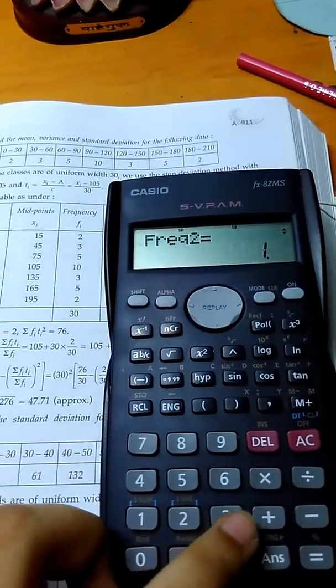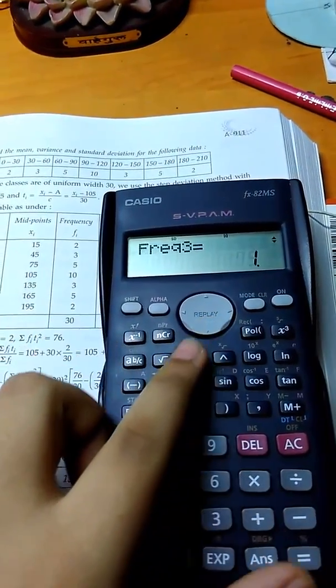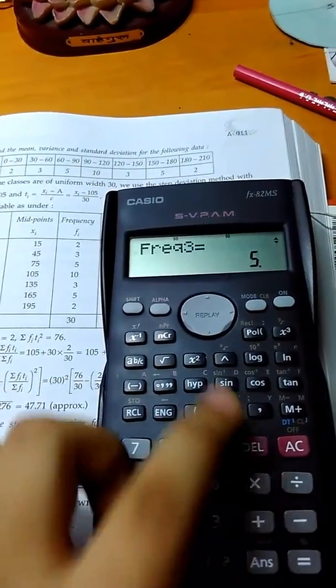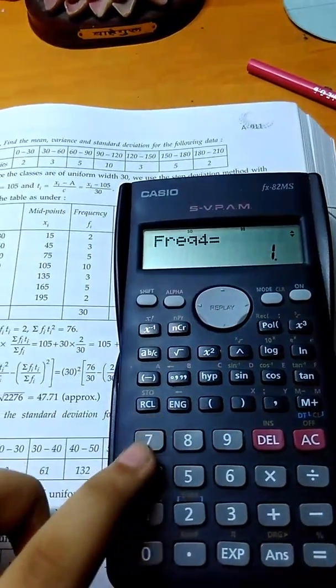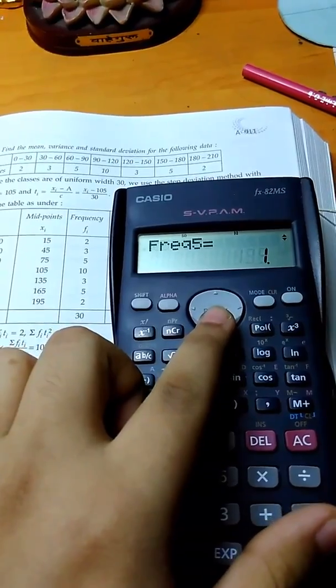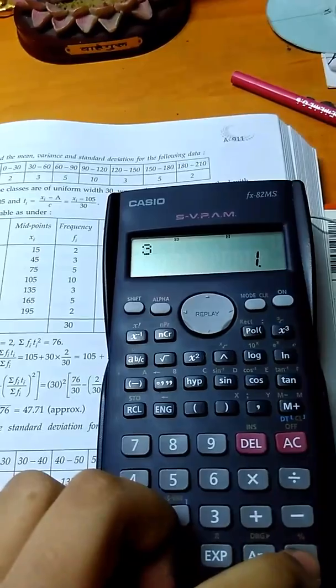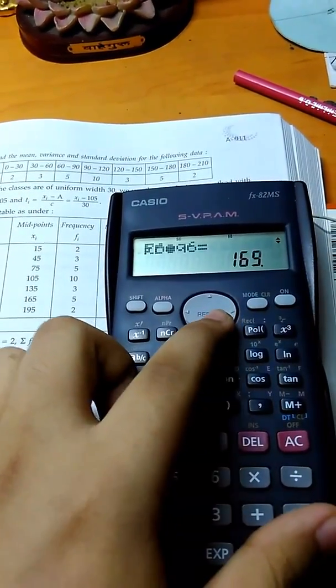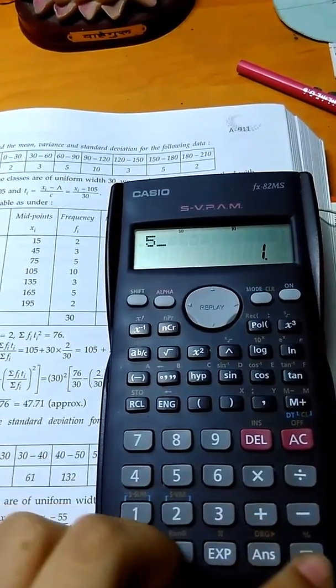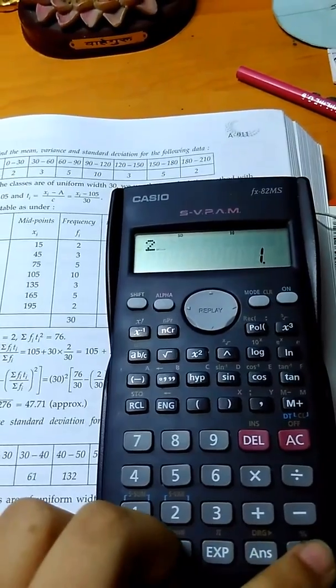Then you go to frequency 2 which is 3. Then you go to frequency 3 which is 5. Then you go to frequency 4 which is 10. Then you go to frequency 5 which is 3, then press the equal sign. Then frequency 6 which is 5, press equal sign. Then frequency 7 which is 2, equal sign.